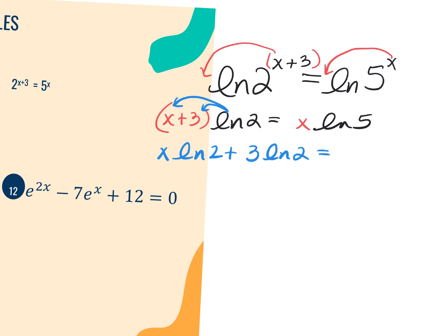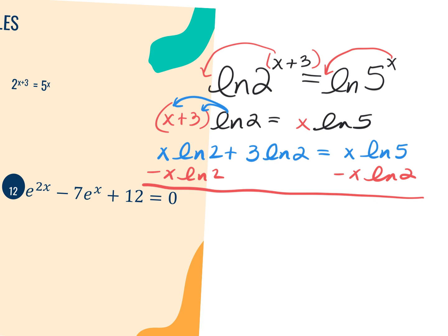On the left side of the equal sign, I need to distribute the natural log of 2 to both the x and the 3. This becomes x times the natural log of 2 plus 3 times the natural log of 2, equals x times the natural log of 5. I need to get my like terms together, so I'll subtract x times the LN of 2 from both sides. I'm left with 3 times the natural log of 2 equals x LN of 5 minus x LN of 2.